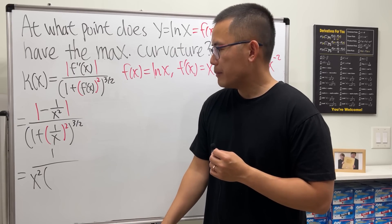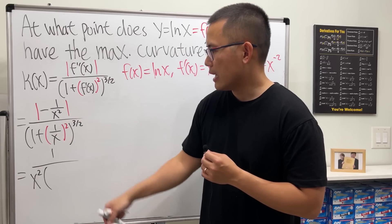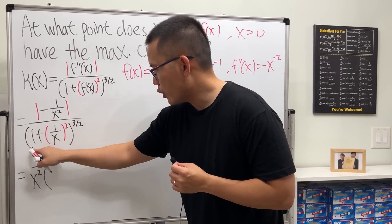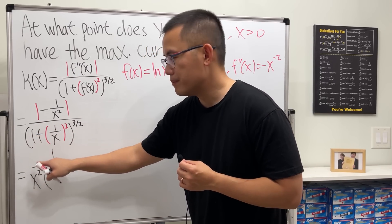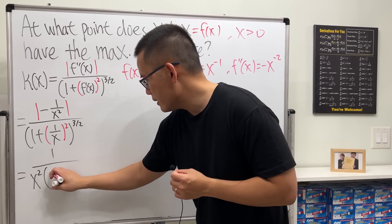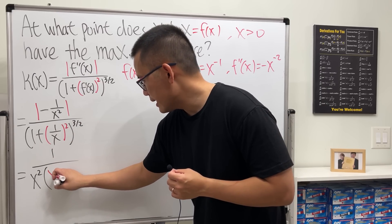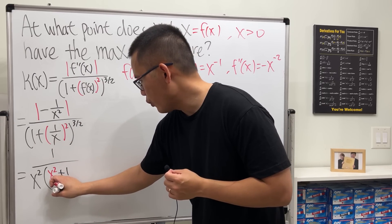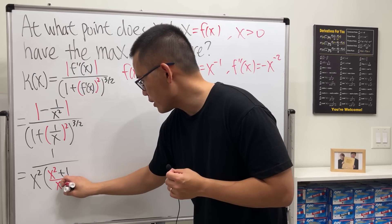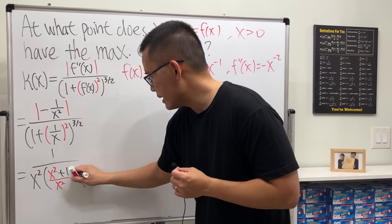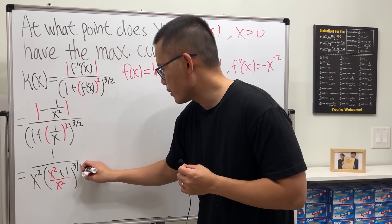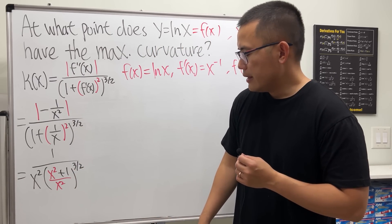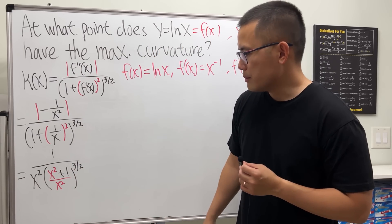Getting a common denominator: we have 1/x² on top, and on the bottom 1 + 1/x² becomes (x² + 1)/x², raised to the 3/2 power. Now it depends on how you want to simplify it.